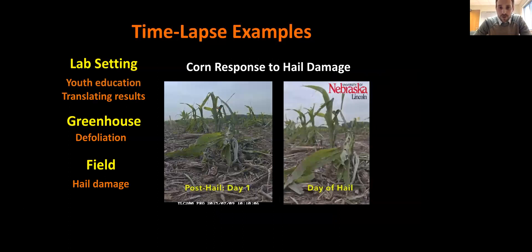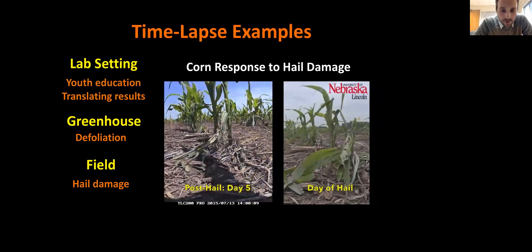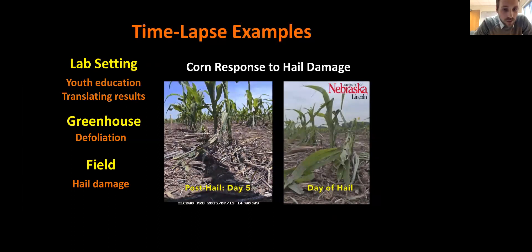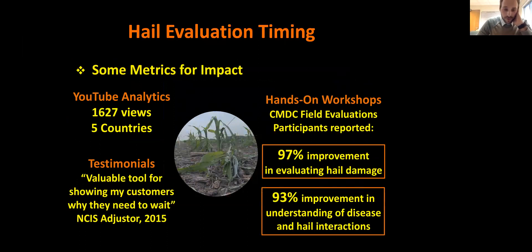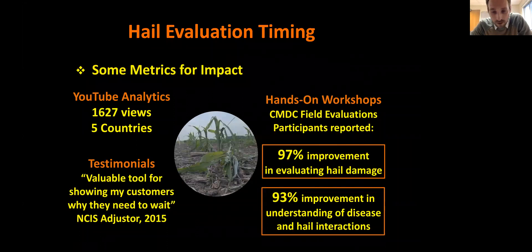Here's a hail damage example taken a few years ago. There's a still image from the day of the hail event, and then you can see plant response over a five-day period — quite sped up from the original video available on YouTube — but it shows how rapid that response can be. National Crop Insurance Service adjusters have used them to communicate the need to wait. We've tested this with a number of people looking at how it improved their evaluation of hail damage and have had some success.